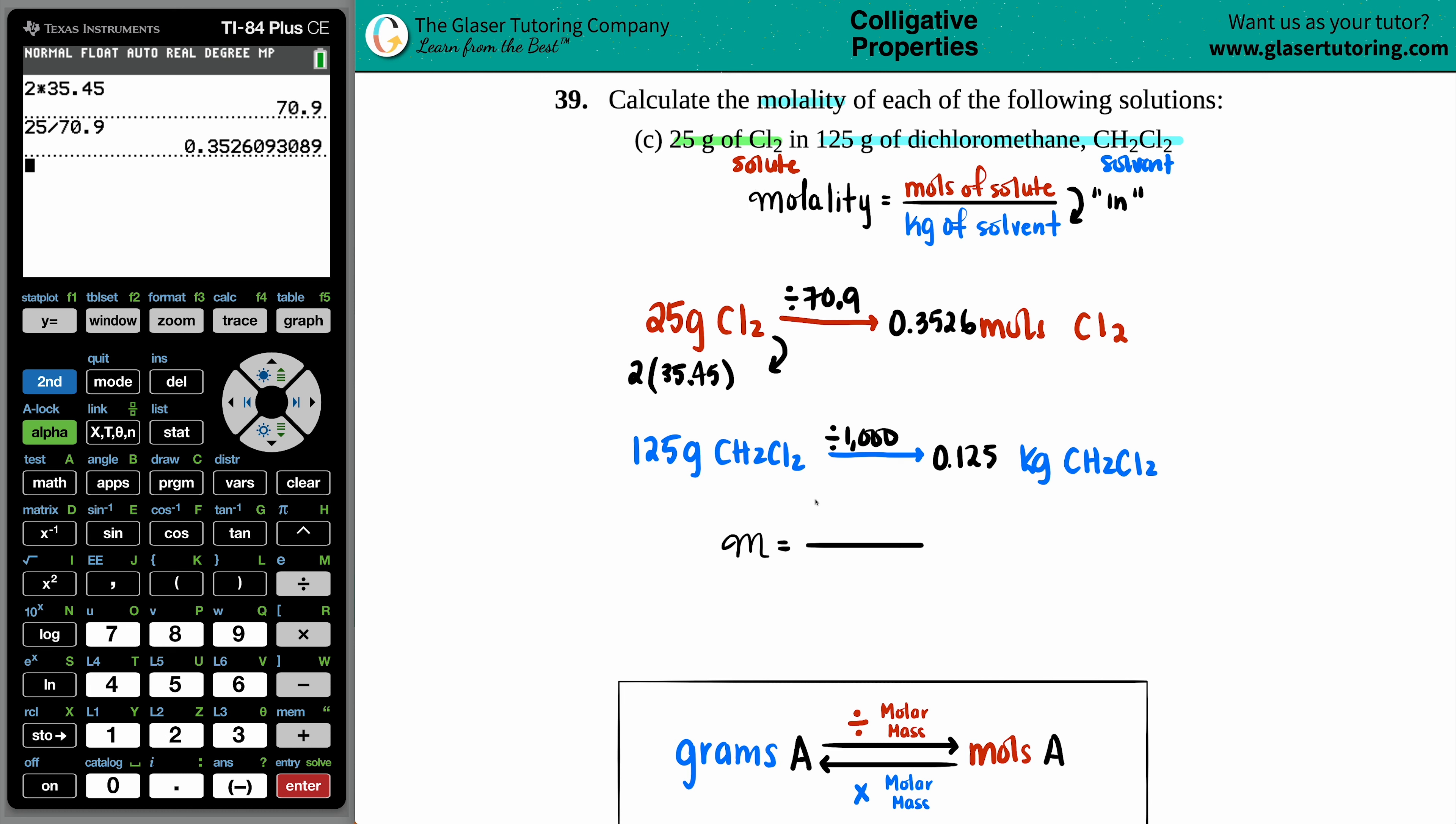So the moles of the solute, 0.3526, divided by the kilograms, 0.125. And there you go. We get 2 point, I guess technically we need 2 sig figs because of the 2 and the 25. So 2.8. And the units for molality, you can just put that italics little m. And that's it.